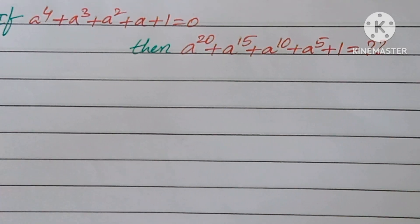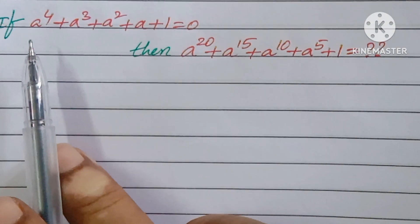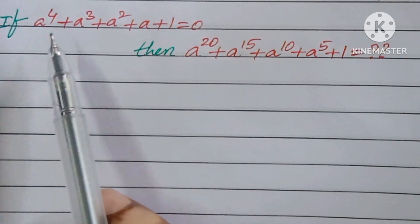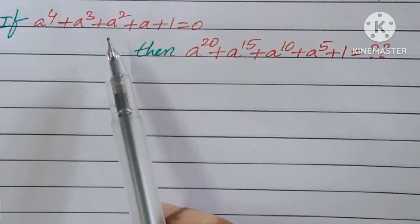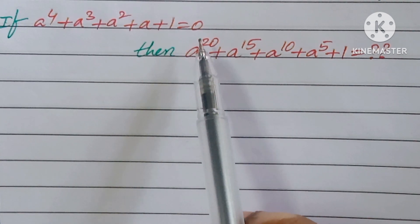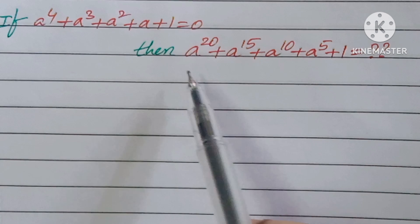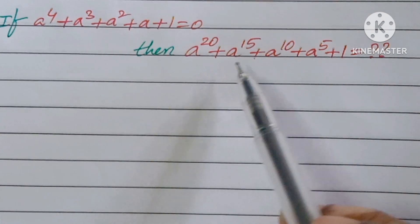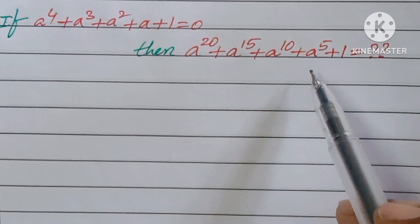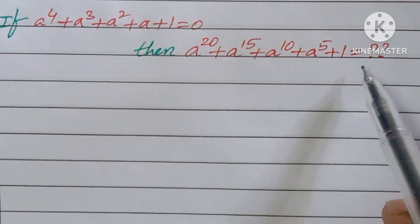Hello, welcome back to IonCGmax. Today we are going to see one logical question. If a to the power 4 plus a cube plus a square plus a plus 1 equal to 0, then find the value of a to the power of 20 plus a power 15 plus a power 10 plus a power 5 plus 1 equal to how much?